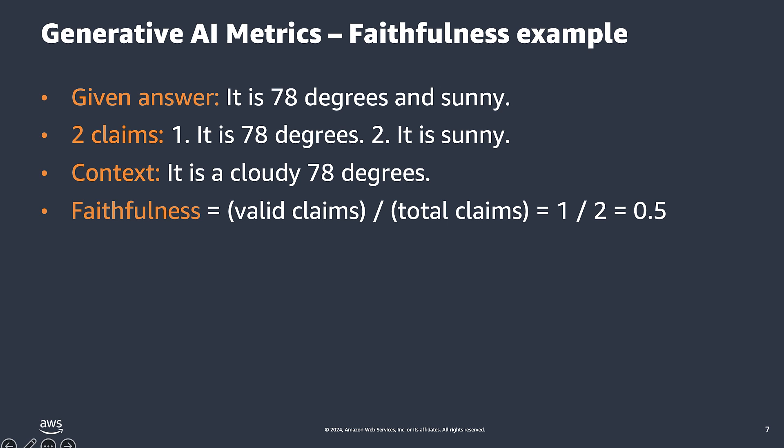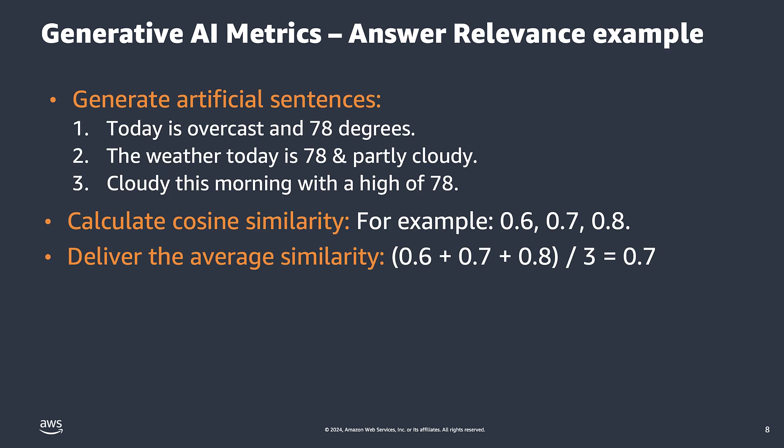Now let's look at an example for our other generation metric, answer relevance. First, we generate artificial questions based on the ground-truth answer. Then we calculate the mean cosine similarity of the generated questions compared to the actual question. In this example, our cosine similarities are 0.6, 0.7, and 0.8. Finally, we average the cosine similarities to deliver a score for answer relevance — for this example, the score is 0.7.